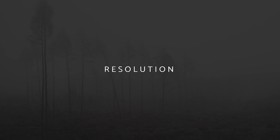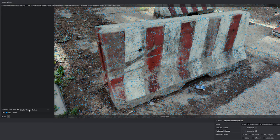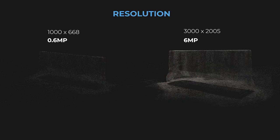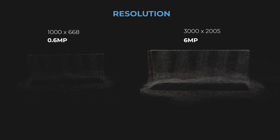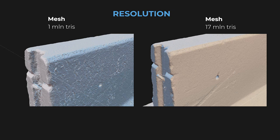Let's start off with resolution. Common sense tells us that the more pixels the source photos have, the more points there will be after the alignment process. Obviously, 6-megapixel photos produce a way more dense point cloud than 0.6-megapixel sources, and if all other properties are equal, the higher resolution sources produce better meshes after reconstruction and in turn result in crisper textures.